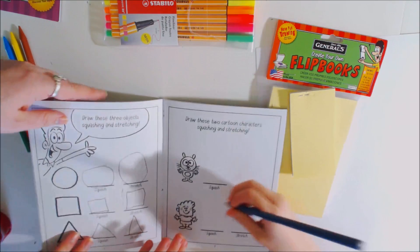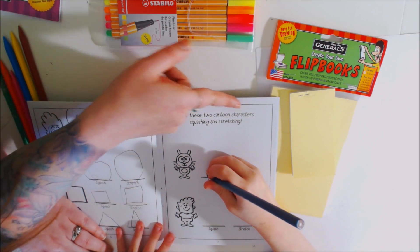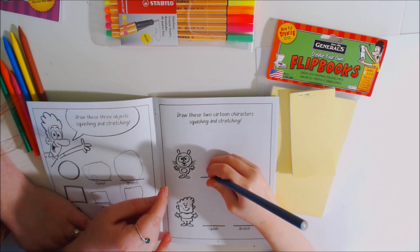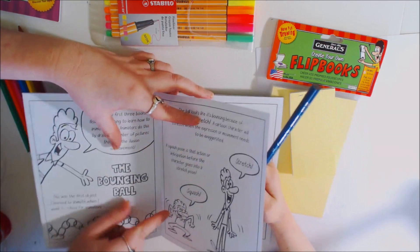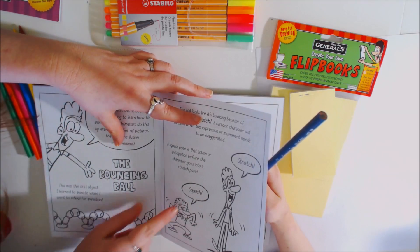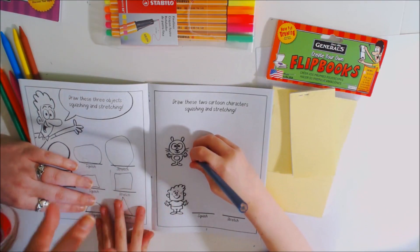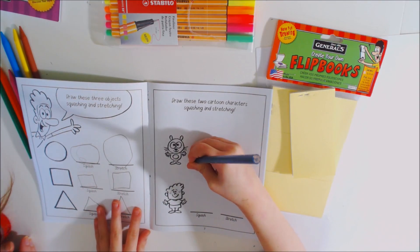All right, you can do that, Bridget. Now draw these two cartoon characters squashing and stretching. Do you think you can draw that squashing? Being short. Remember how when we looked at the person he bent his knees? See how he's squashed and he bent his arms, and he was lower and wider, right?